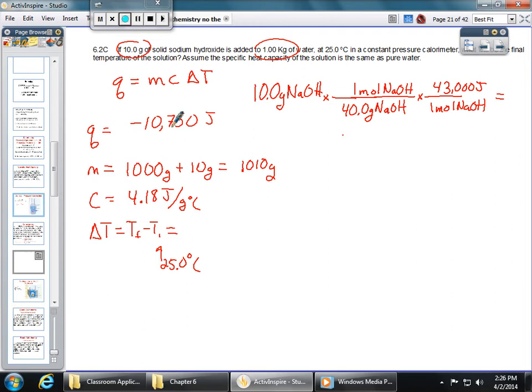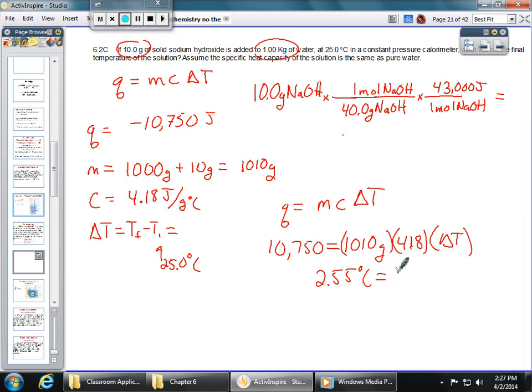Okay? You're now going to go, and we're going to put that into our equation. So we're going to have Q equals MC delta T. So our Q is now going to be 10,750. I'm going to make that a positive since the heat that the water is absorbing is equal and opposite to the heat that the solution is releasing. We have a mass of 1,010. We have a heat capacity of 4.18 joules per gram degree Celsius. And we're going to find our delta T. So you plug that into your calculator. You're going to get 2.55 degrees Celsius. That's going to be our delta T. And again,